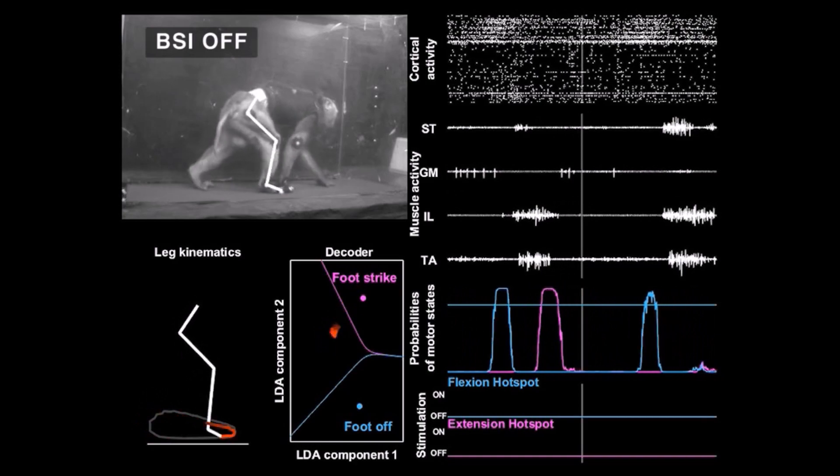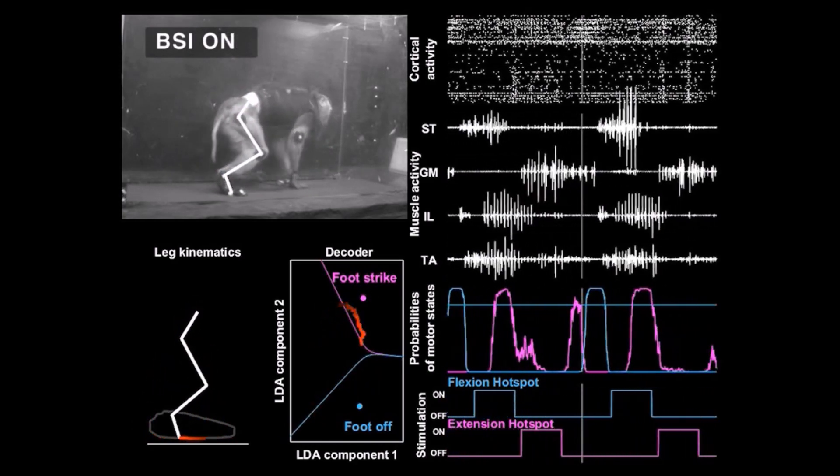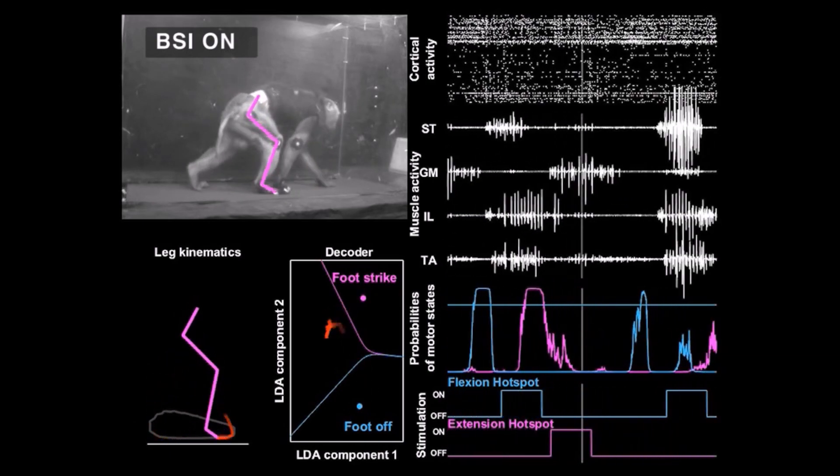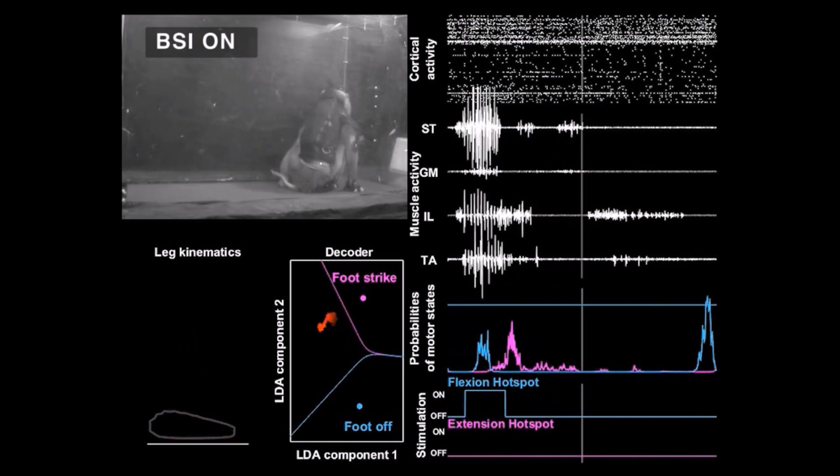These predictions directly triggered stimulation protocols that augmented the extension and flexion movements of the leg without disrupting the natural locomotion of the monkeys.